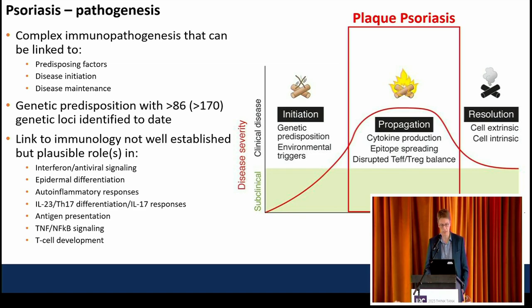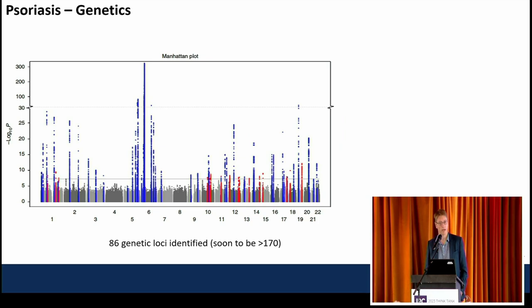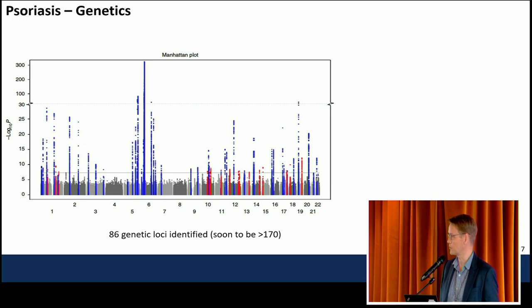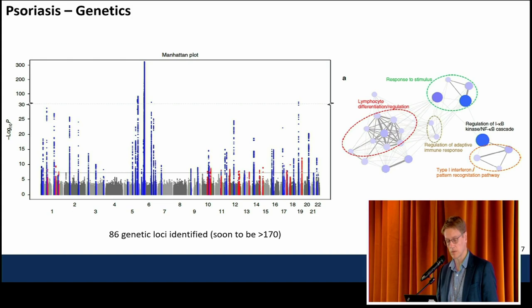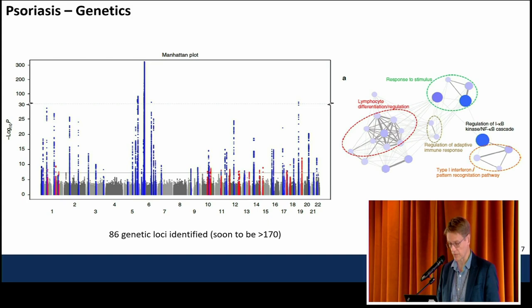This is what we call a Manhattan plot, published by my colleague Alex Zoy in Nature Communications in 2017, and many of you in the room contributed to this study. It shows you the genetic loci at that time across the chromosomes, with peaks reaching above genome-wide significance threshold shown in blue and red. We're assuming that the gene closest to the genetic locus or SNP is the one associated with the disease.